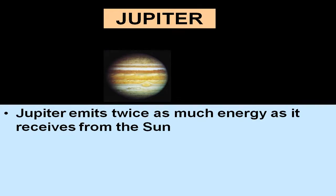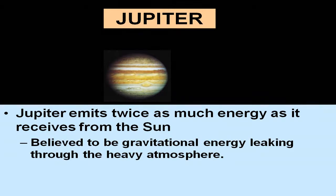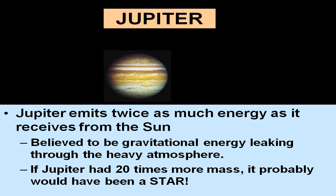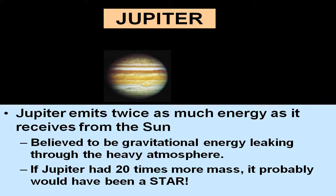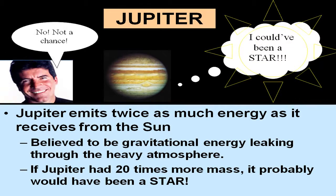Jupiter emits twice as much energy as it receives from the Sun. This is believed to be gravitational energy leaking through the heavy atmosphere, though there is no great explanation for this energy. If Jupiter had 20 times more mass — most of it being hydrogen — it would actually have been a star, and our solar system would have been a double star system. In fact, maybe as many as 50% or more of the stars you see are double star systems, so Jupiter could have been a star.